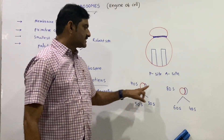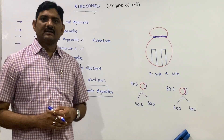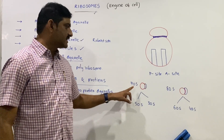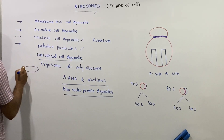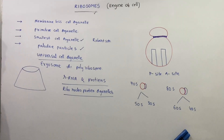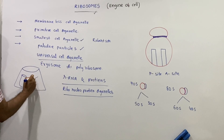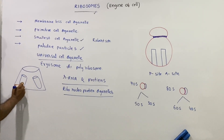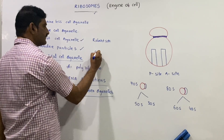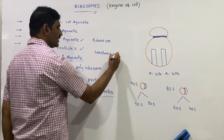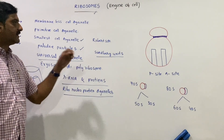Ribosomes are of two types based on sedimentation coefficient: 70S and 80S. The sedimentation coefficient is expressed in Svedberg units.